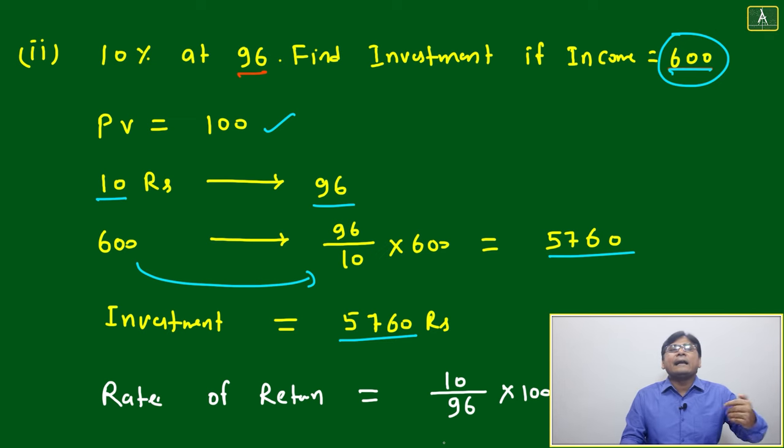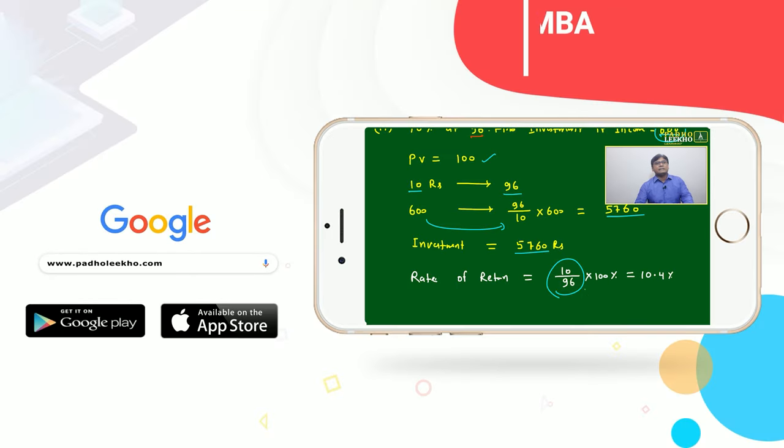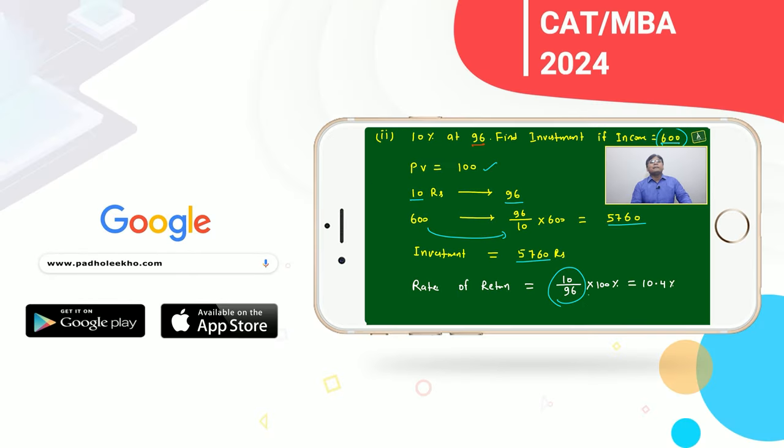How to find rate of return? 10 out of 96, that is very clear. 10 out of 96 times 100 percent equals 10.4 percent.